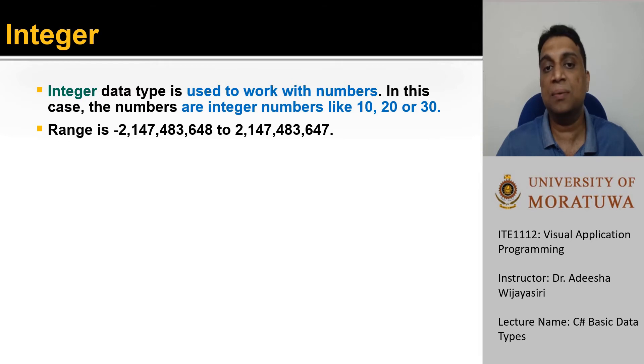This range limitation comes from the number of bits which are used to store the value. In the case of integer type in C sharp, 32 bits are used to store an integer value.